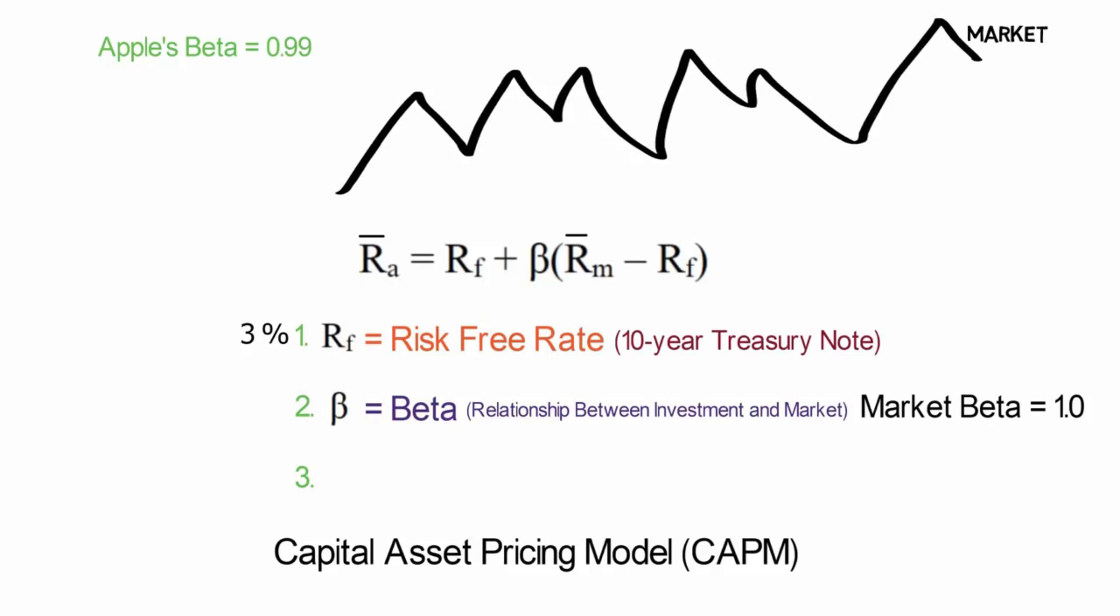So if the market is up 1%, then Apple stock will be up almost 1%. More exactly, it should be up about 0.99%. Same is true on the downside. The market goes down, Apple stock will be down, just short of 1%.